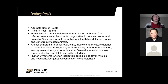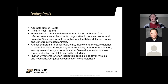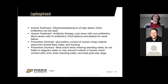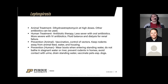Leptospirosis — often called lepto — comes from the urine of infected animals, usually rodents, but can also be dogs, cattle, horses, and other wild animals. Dogs and cattle can have serious issues, and it can be serious for humans in some cases. The best prevention is vaccination and keeping rodents away from your animal's feed and housing. Also wear closed-toed boots when entering standing water, avoid spending time in contaminated water in your barn or property, and prevent rodents from coming into your home or near your animals.